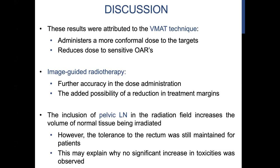The inclusion of pelvic lymph nodes would increase the volume being treated; however, tolerance to the rectum was still maintained for patients, which would explain why there was no significant increase in toxicities observed. The rectal dosimetry showed no relation to side effects, which is quite a strange result — since it would reason that the more dose in the rectum, the higher the side effects. However, for all patients included in the study, the rectal dose was within tolerance, with the recommended dose below 24.6, and all patients had a dose well below that value. With regards to patient age and diagnosis, our study was in line with previous studies, showing no significant relationship.